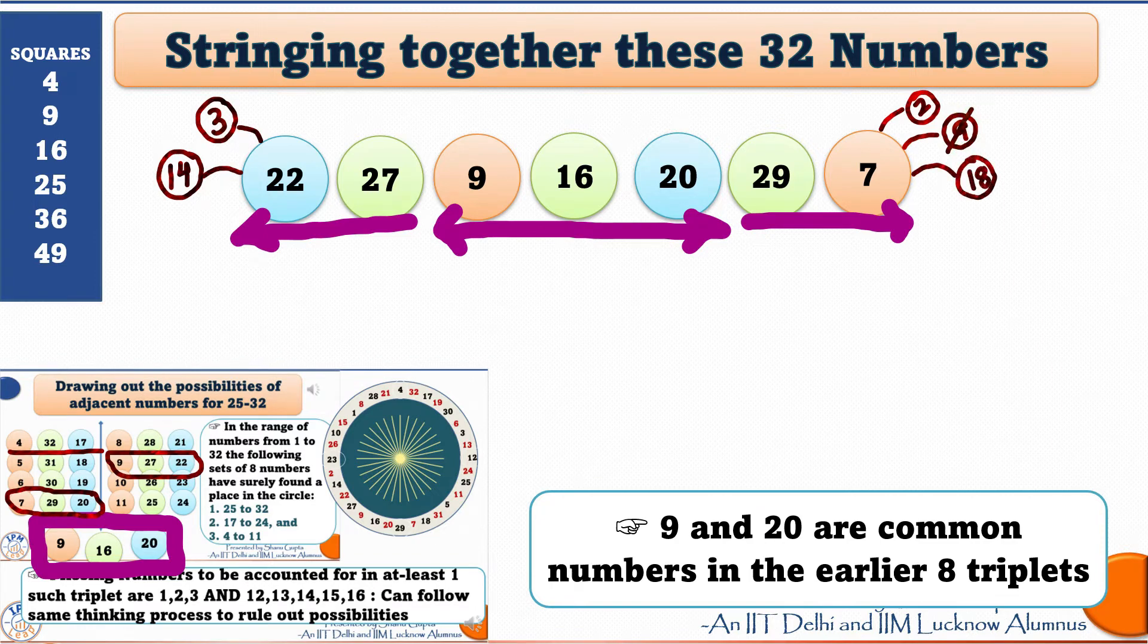So, we can have a number 18 here. Another possible square is 36. But that gives us the next number as 29. 29 is already there in this string. So, we ignore this possibility as well. Similarly, let us work on another string simultaneously. I will pick the triplet 4, 32 and 17 because 4 is a lucky number.